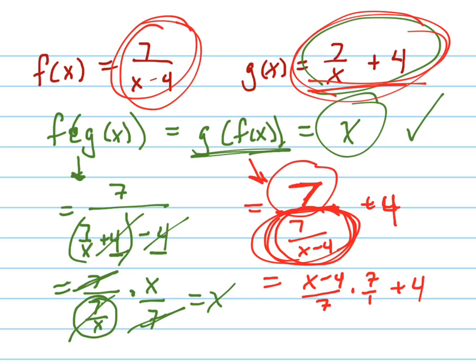What can I do with the 7s? They cancel out. So I have x minus 4 over 1, which is just x minus 4, plus 4. Hey, look at that. What's minus 4 and plus 4? They cancel, and I just get x. So yes, these are inverses of each other.